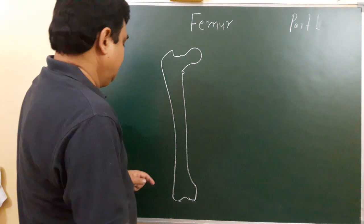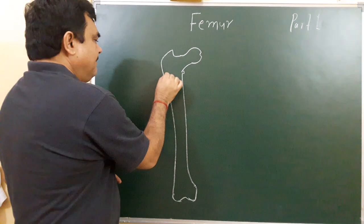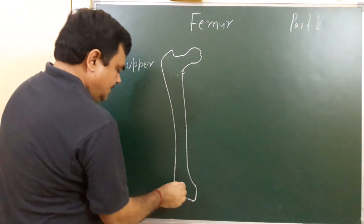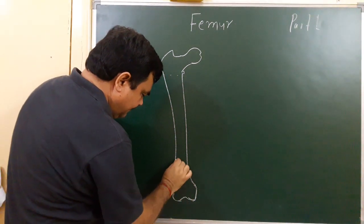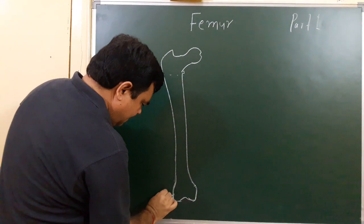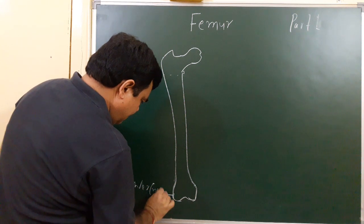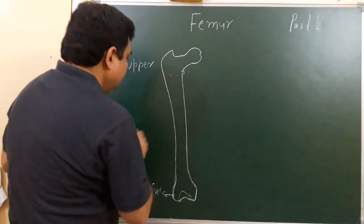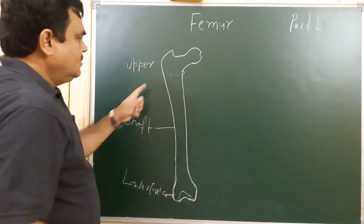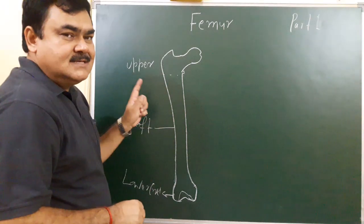This is the femur. It has an upper end, a lower end, and a shaft. So it has three parts: upper end, lower end, and shaft. This is the longest and strongest bone of the body.